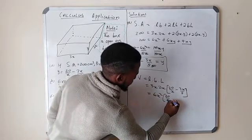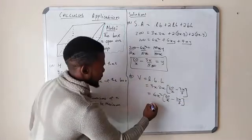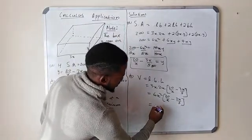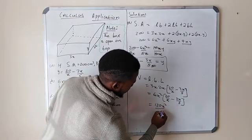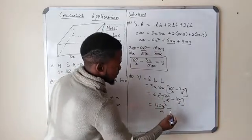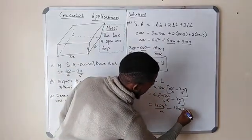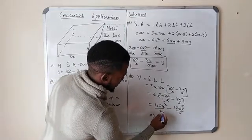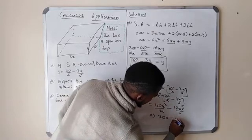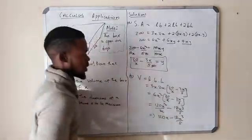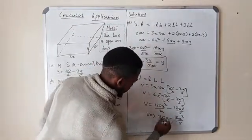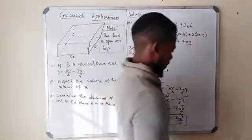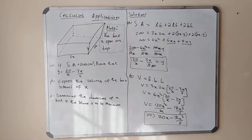Simplifying: V = 6x² × (20/x − 3x/5). Distributing 6x² gives 6x² × 20/x − 6x² × 3x/5 = 120x − 18x³/5. So the volume of the box in terms of x is V = 120x − 18x³/5.